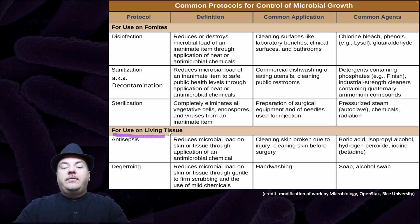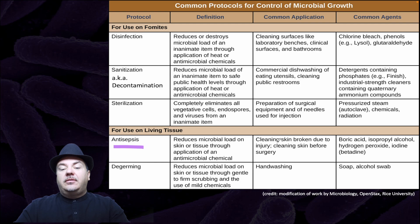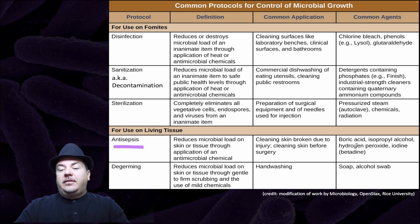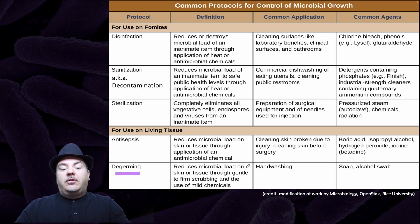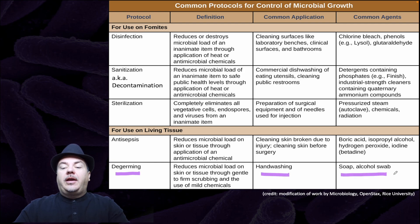For use on living tissues, we have antisepsis, which reduces microbial load on skin or tissue through application of antimicrobial chemicals. Common applications include cleaning skin broken due to injury and cleaning skin before surgery. Common agents include boric acid, isopropyl alcohol, hydrogen peroxide, or iodine. Or we have degermination, which reduces microbial load on skin or tissue through gentle to firm scrubbing and the use of mild chemicals. Common application is hand washing; common agents are soap or an alcohol swab.